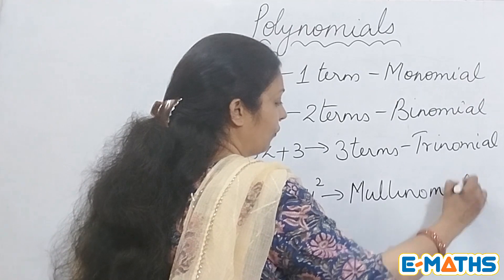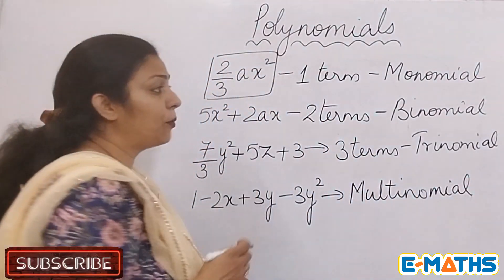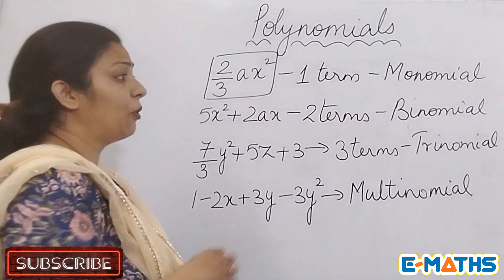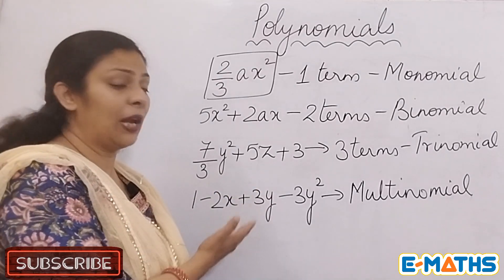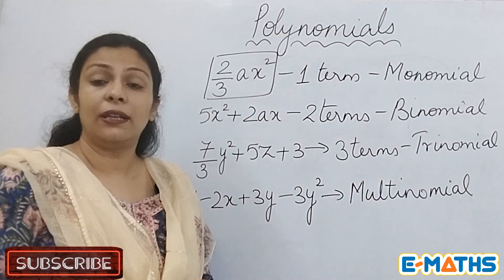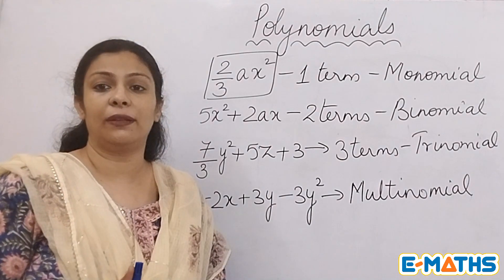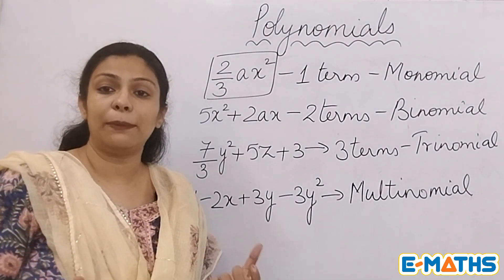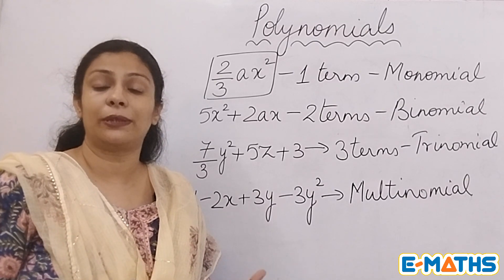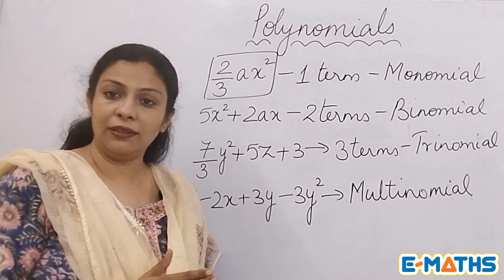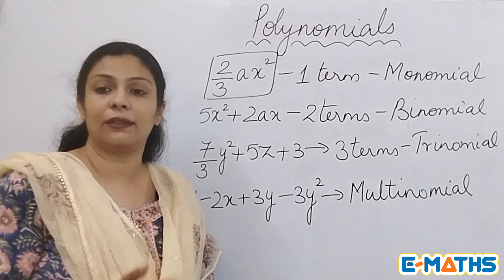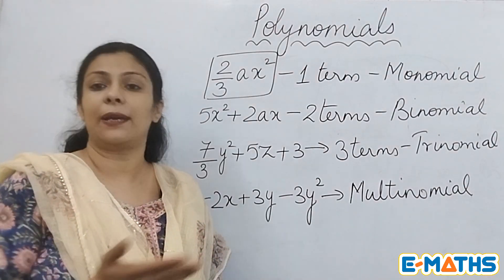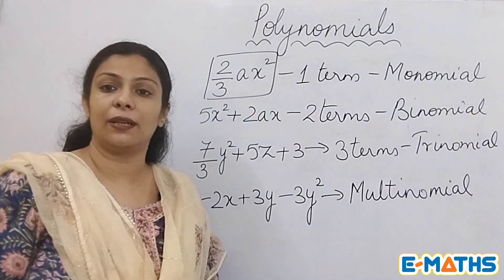So why have I put this heading 'polynomials' when I am writing about monomial, binomial, trinomial, and multinomial? Like in polygons - polygons are those figures which have minimum three sides, formed by minimum three line segments. Triangle, quadrilaterals, pentagon, hexagon - all these types of figures come under polygons only.